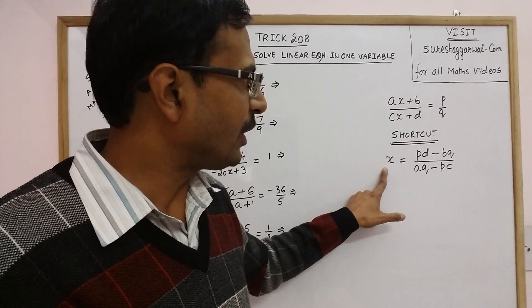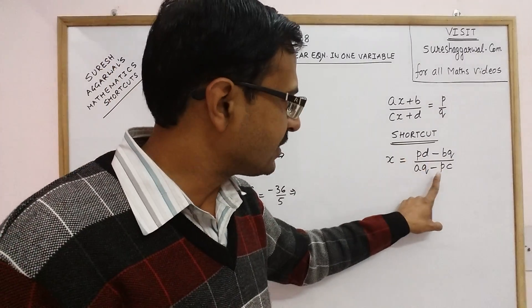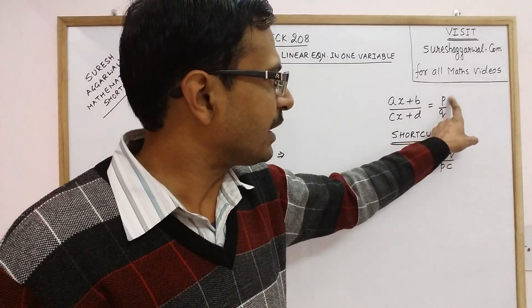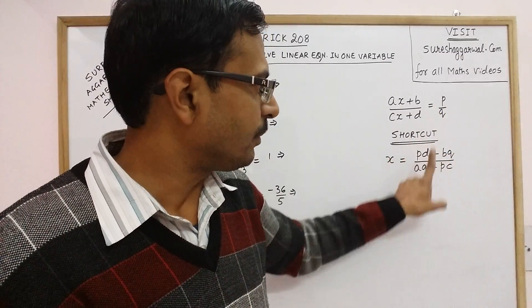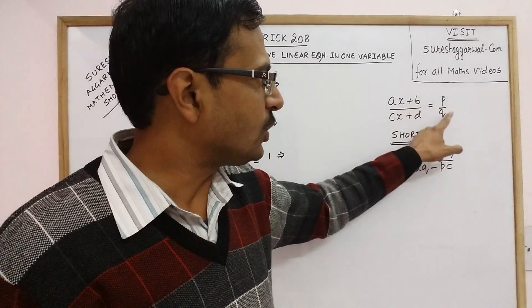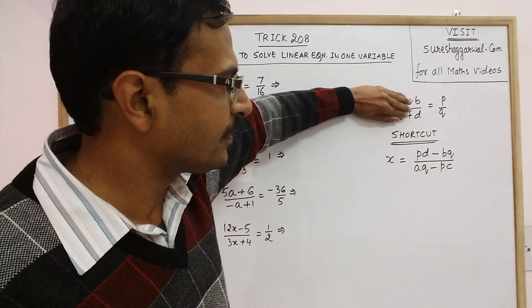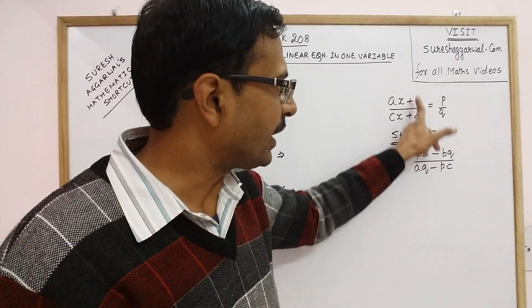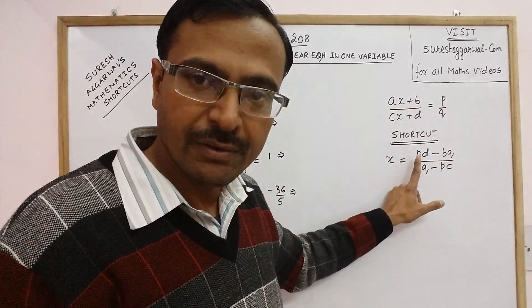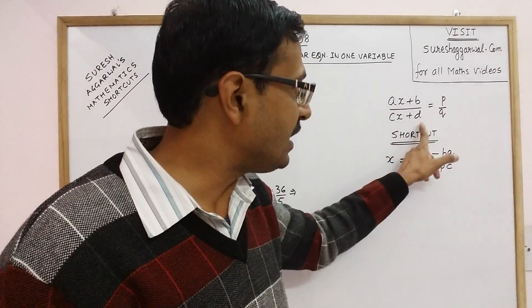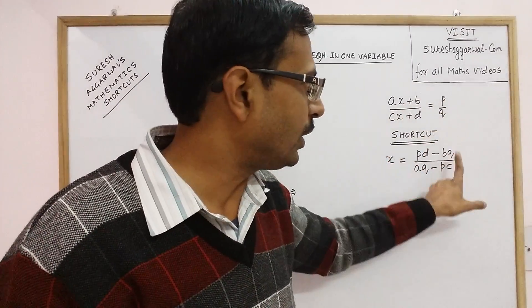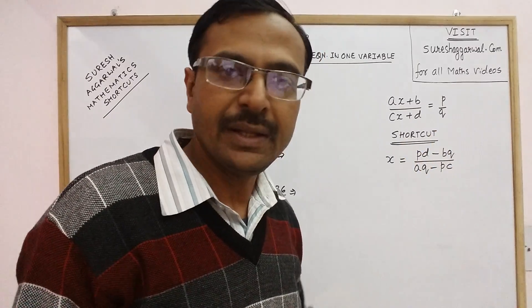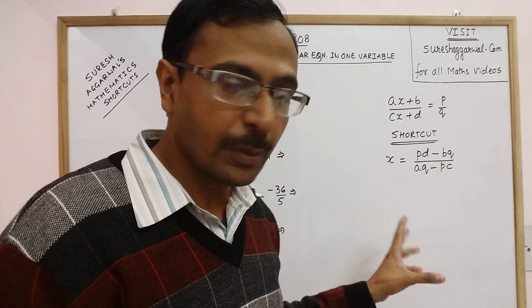Now this step will be obtained by this. See pd, so we have to multiply this by this: pd minus bq. So just forget the first term and just cross multiply and subtract: pd minus bq. Remember we need to write pd first and bq later because if you write it in the opposite way then there will be a problem of negative sign.